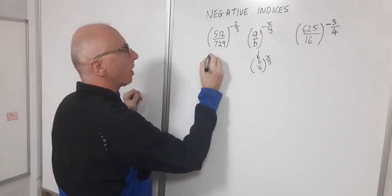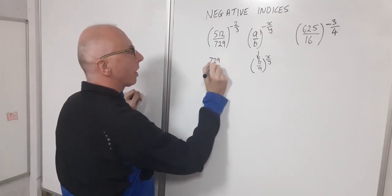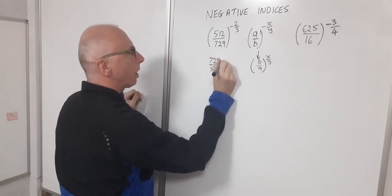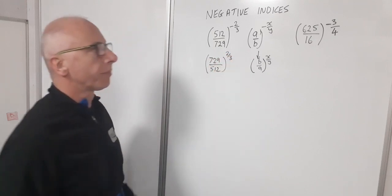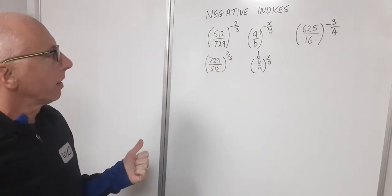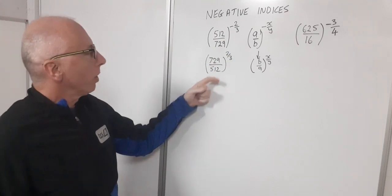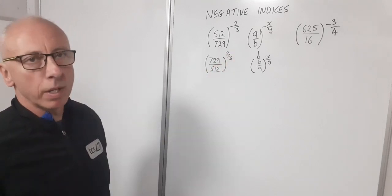So now we can rewrite this as 729 over 512 to the power of two thirds. So that takes care of that. Now what have we got going on here? Can we do anything with this fraction?